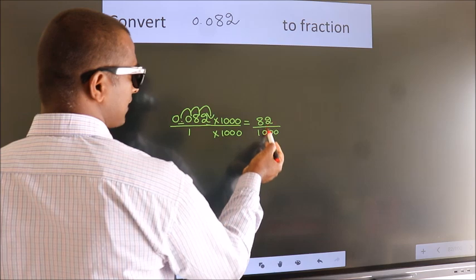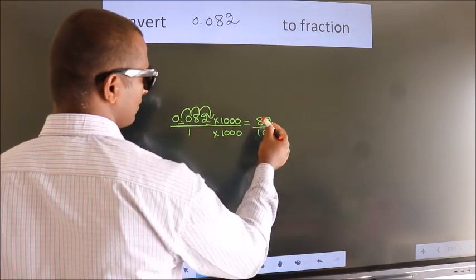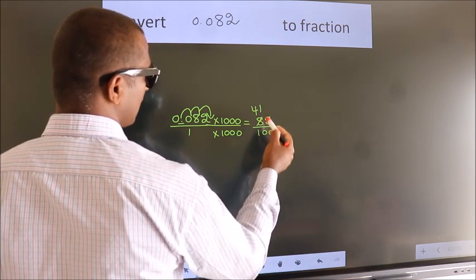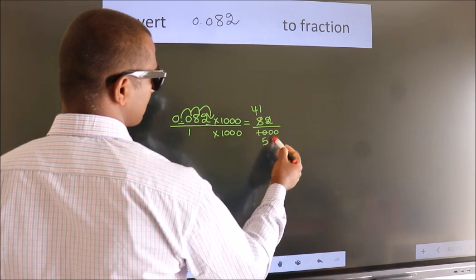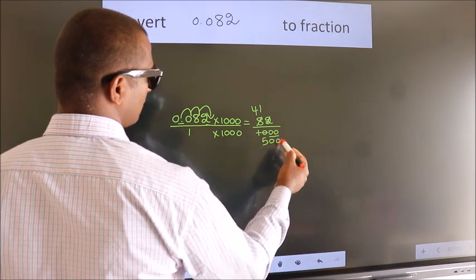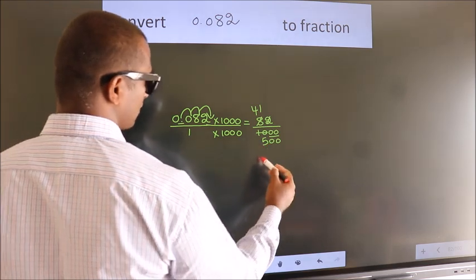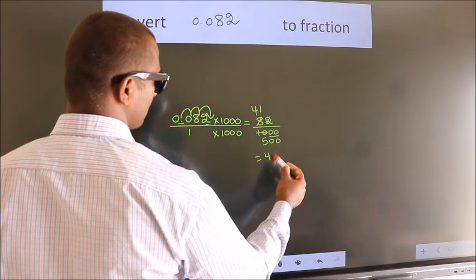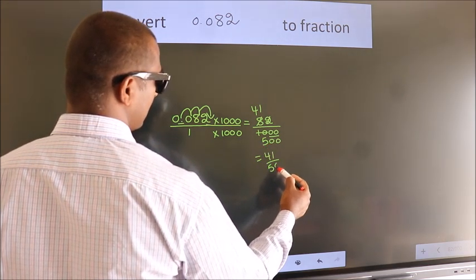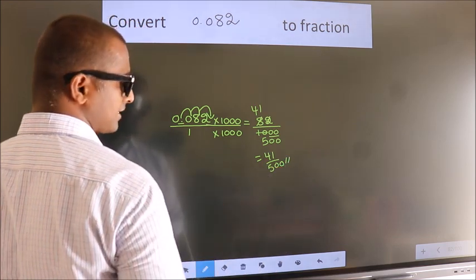I now cancel with 2. 2 into 41 is 82, 2 into 500 is 1000. Further cannot be simplified. So our fraction is 41 by 500.